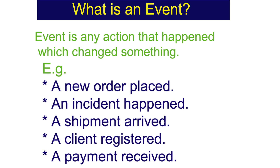Let's talk about this based on some examples so that the concept gets more clear. Consider a system in any retail store where an order has been placed online. Once an order has been placed, it means an action has happened on a certain object — in this case, the object is the order. Once an order has been placed, there are many other systems or applications within the ecosystem of an organization which are interested to know about that event so that they can take necessary actions to process that order.